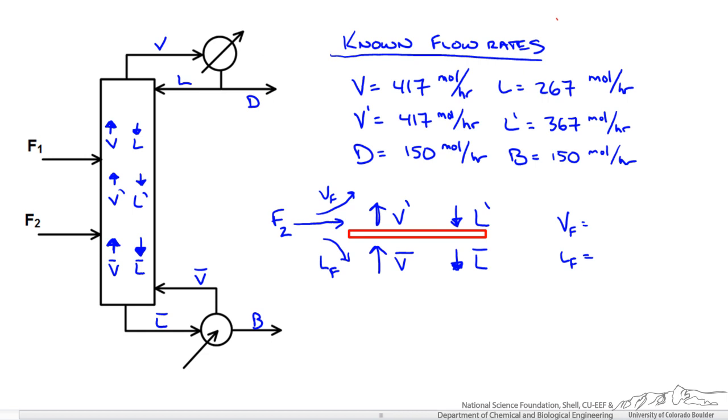We are going to go ahead and do a material balance over our second feed stage. I have drawn what that might look like here with our appropriate labeling of our flow rates. We are told that it is a superheated vapor. So Vf is just going to be equal to F2 and Lf is going to be equal to 0. But we also have some of the liquid coming down that gets vaporized.